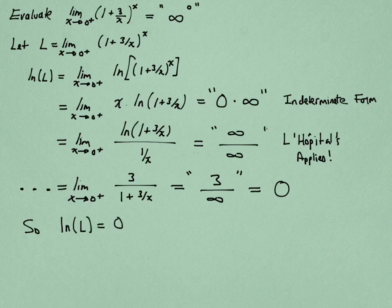Don't forget, though, that this is the log of the limit we're interested in. This means the limit we really wanted, L itself, is e to that value, so e to the 0, and in effect giving us equal to 1.